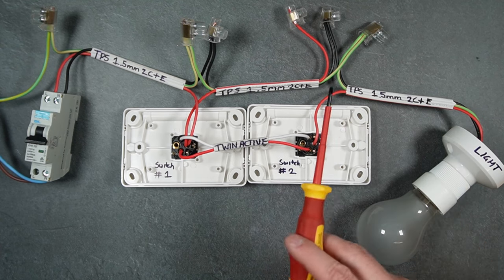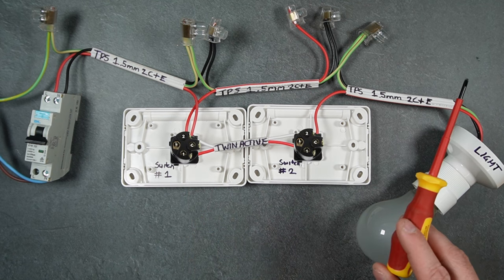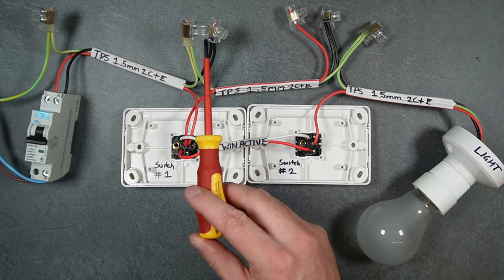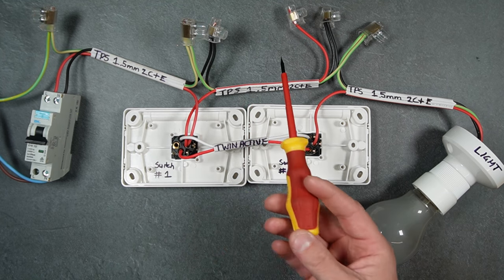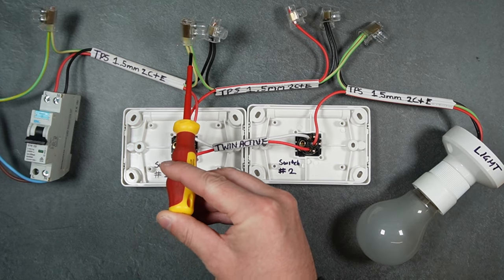You might find the neutrals in the loop-in terminals, which is fine, but I do prefer to join the neutrals in a connector because it provides a much better connection. The earth will either be in a connector or soldered and taped back to the TPS - that's also normal.